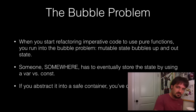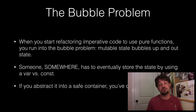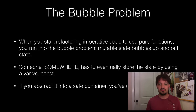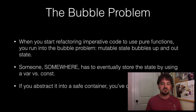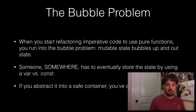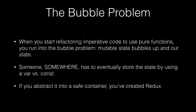Now let's talk about the bubble problem. Nobody in the functional world seems to think this is a really big deal or explains how to solve it — and it is, it's huge. When you have to refactor your thinking about how do I code in a functional way and build a real application using an existing imperative language like PHP or JavaScript, how do I write my code? If everything's new, where's my data go? You start refactoring imperative code and you'll basically use pure functions. You run into the bubble problem where mutable state bubbles up and out. Someone somewhere eventually has to store state by a var or const. So if you extract it into a safe container, you've effectively created Redux — it puts a nice safe shell around mutable state.